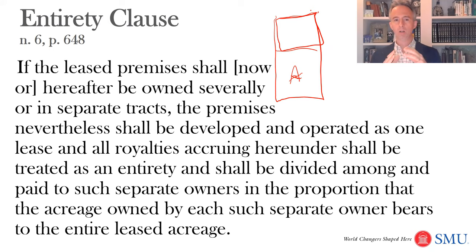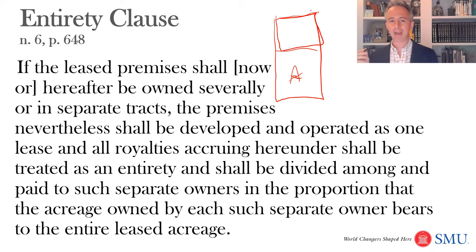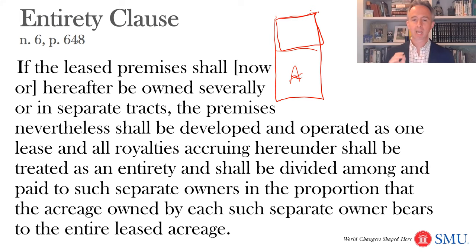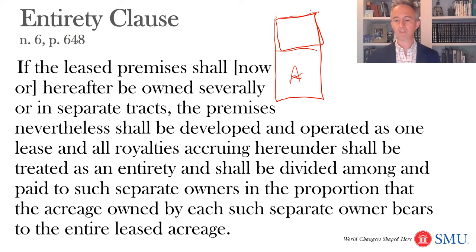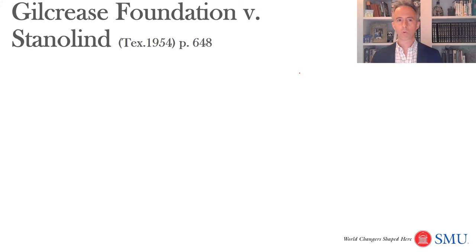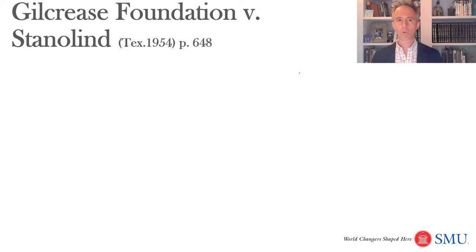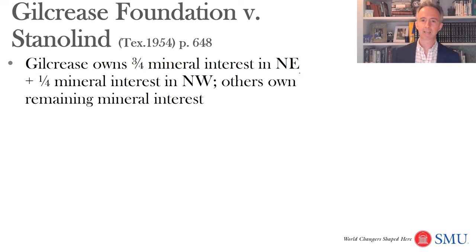For that reason, sometimes oil and gas companies will want an entirety clause. This is what an entirety clause says: 'If the lease premises shall, now or hereafter, be owned severally or in separate tracts, the premises, nevertheless, shall be developed and operated as one lease, and all royalties accruing hereunder shall be treated as an entirety, and shall be divided among and paid to such separate owners in the proportion that the acreage owned by each such separate owner bears to the entire leased acreage.' So this entirety clause says we're going to apportion the royalties, even if the well is just on your property, and that can make for easier relationships with landowners. However, the entirety clause can create certain difficulties, as seen in Gilcrease Foundation v. Staniland, a Texas case from 1954.